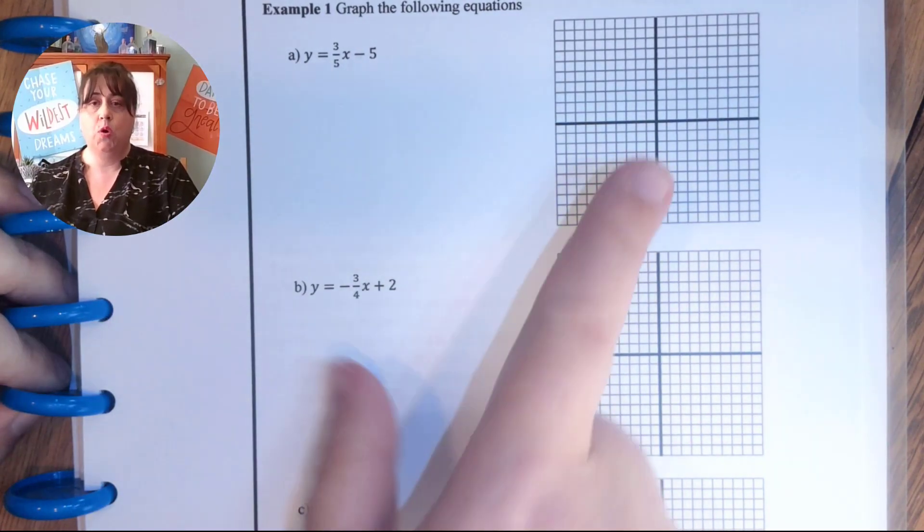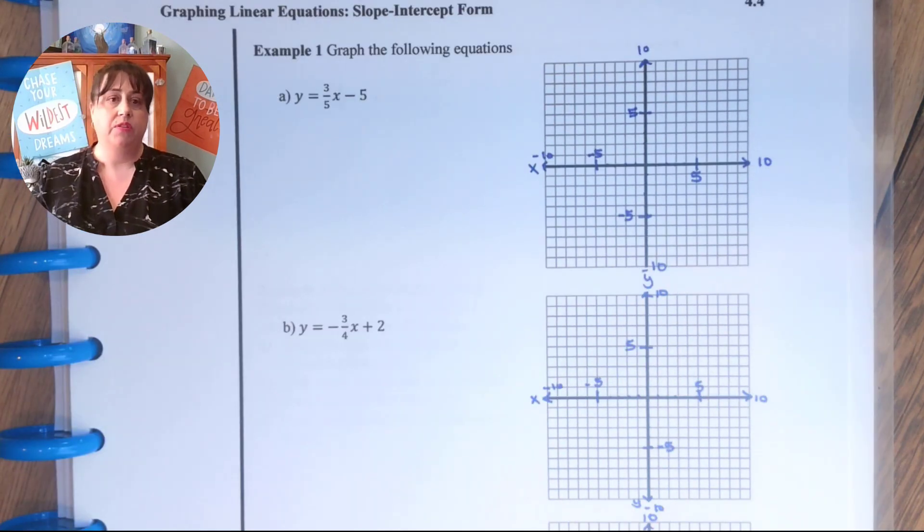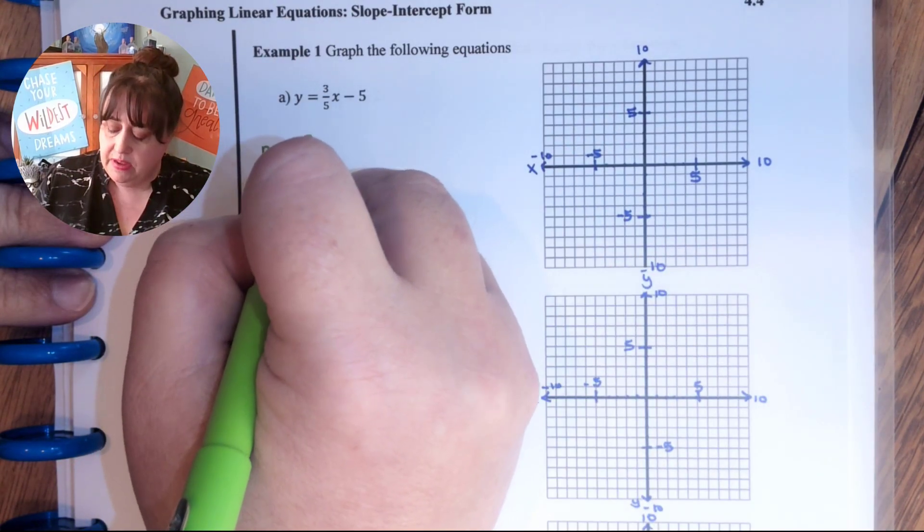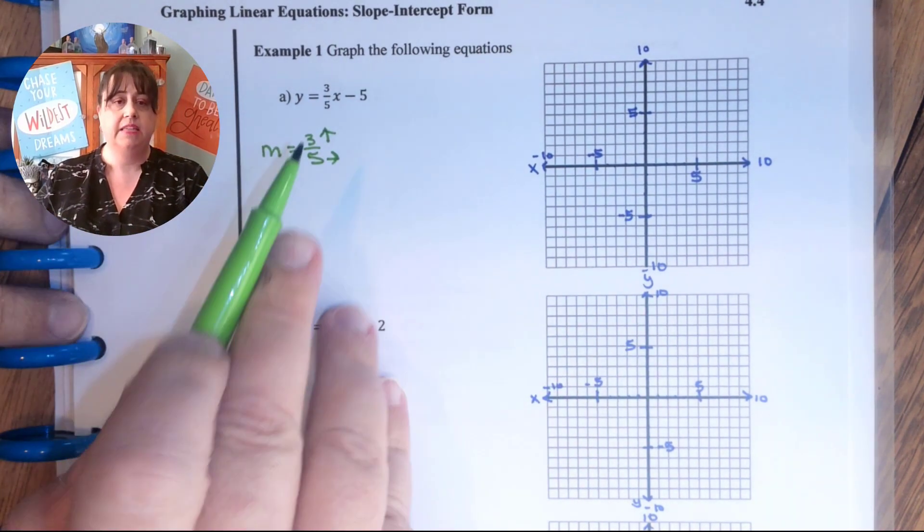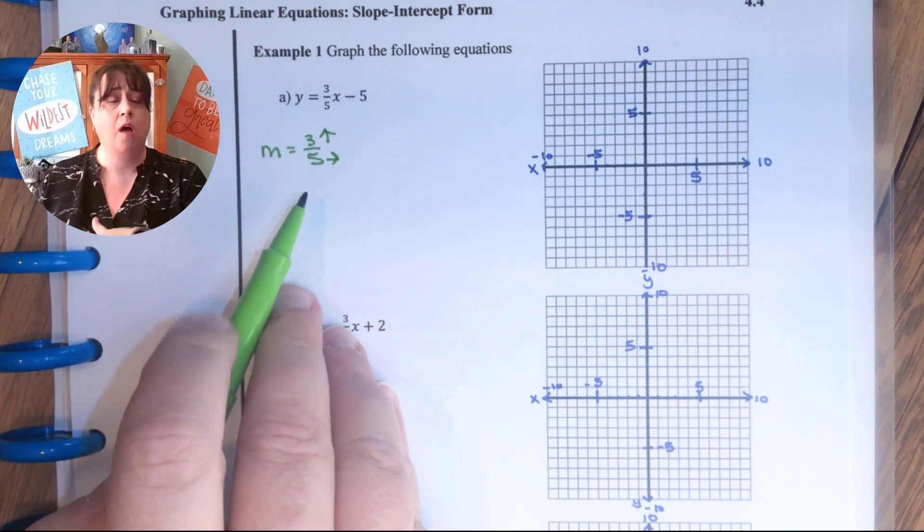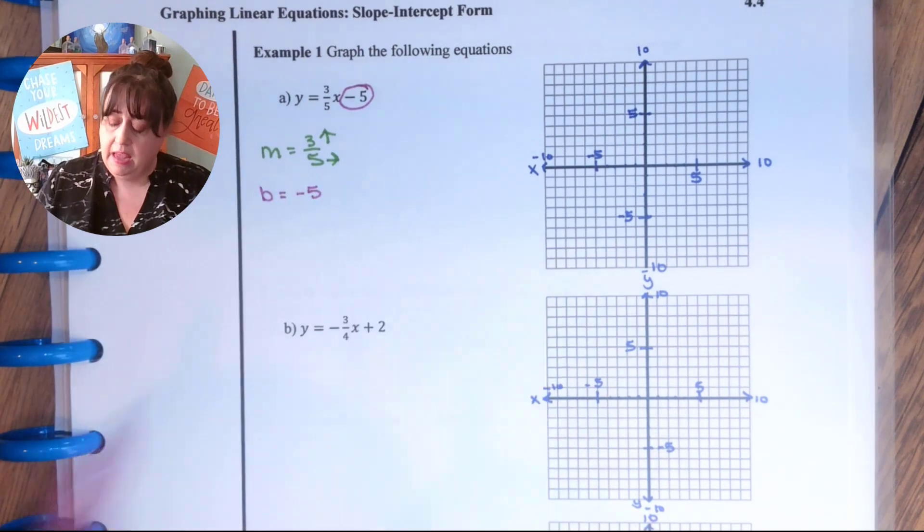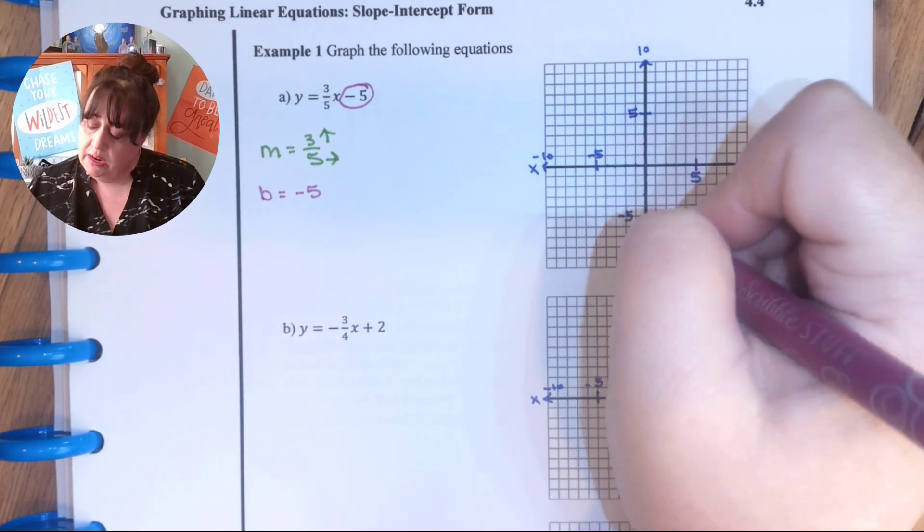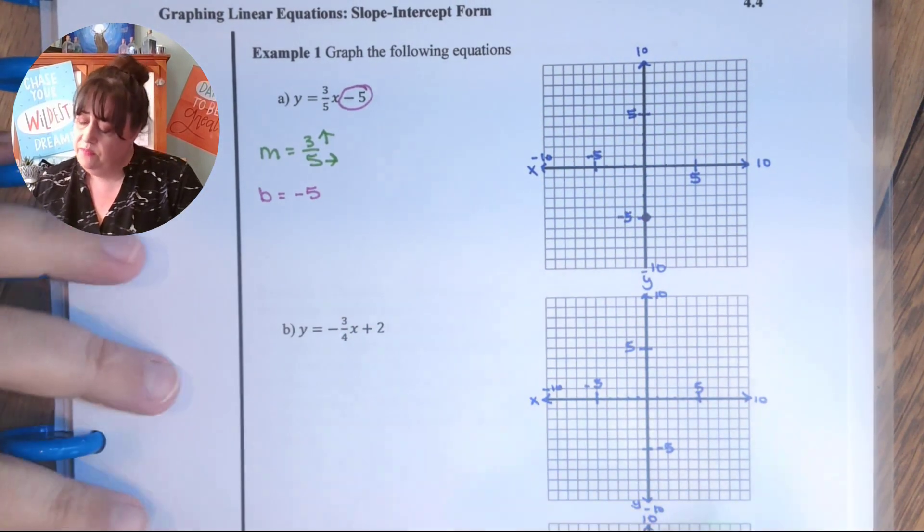Go ahead and set up your coordinate plane with the scale and the orientation. Okay, so the way that I like to start these is actually just writing down the point or the pieces that I have. So m is equal to 3 fifths, which means up 3 and right 5. It's up 3 because it's positive and then it's always to the right. And then I have negative 5 and it's always on the y-axis. So the one that goes up and down. So I'm going to start at negative 5 and I'm going to put a dot and then it goes up 3 and right 5. So up 3.